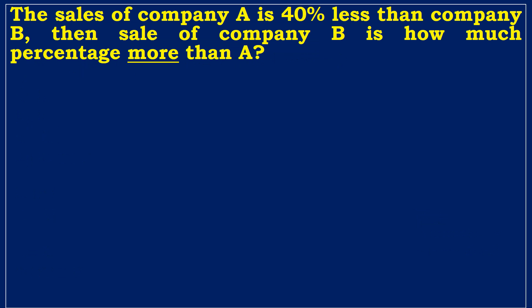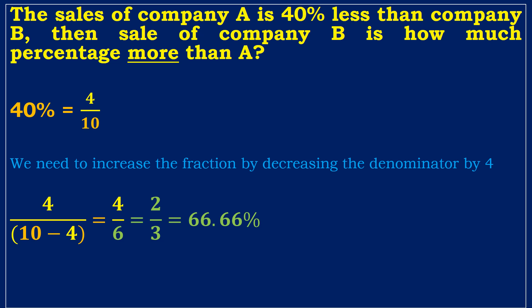Let's look at another example of the percentage concept. The sales of company A is 40% less than company B, then the sale of company B is how much percentage more than A. The sales of company A is 40% less than company B. The fraction for 40% is 4 divided by 10. We must determine how much percentage is more than A. The key word here is more than, which indicates we must increase the fraction. This may be achieved by decreasing the denominator value. Here, the numerator value is 4. So, subtract the denominator value by 4. As a result, the denominator value is 10 minus 4. The fraction then becomes 4 by 6, or 2 by 3. It may be expressed as a percentage, which is 2 divided by 3 equals 66.66 percent.